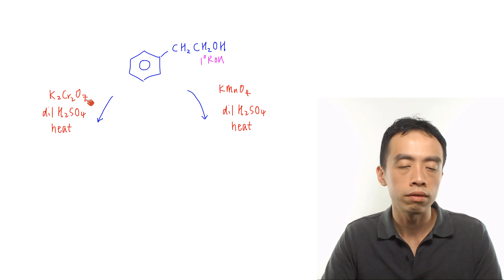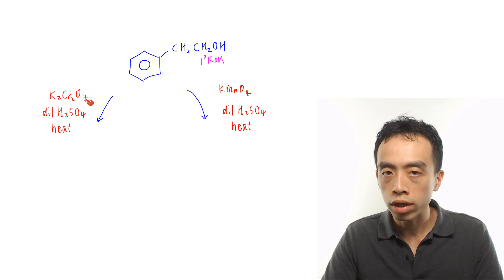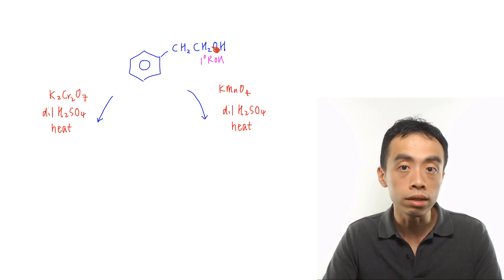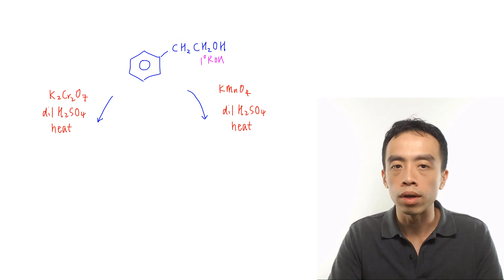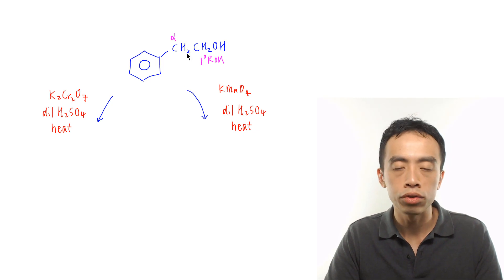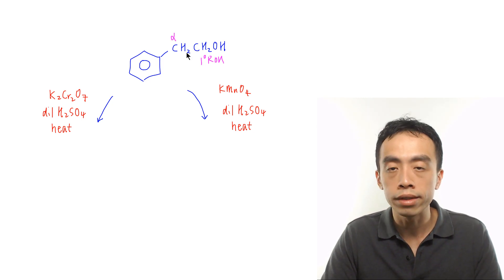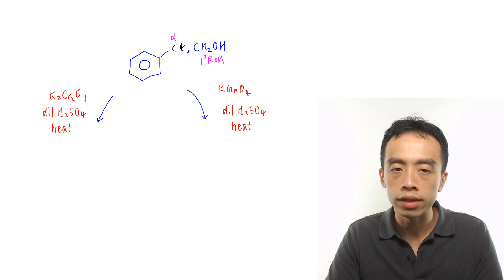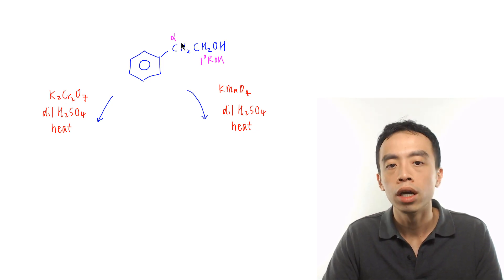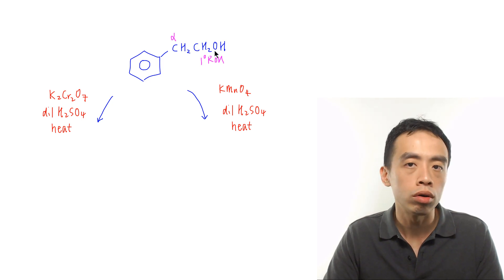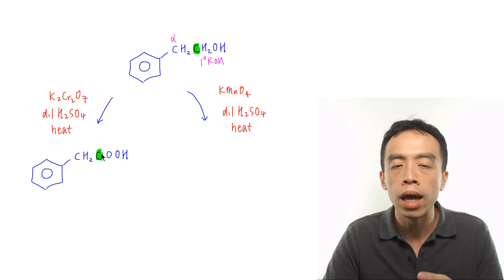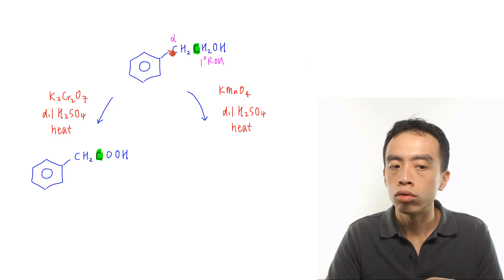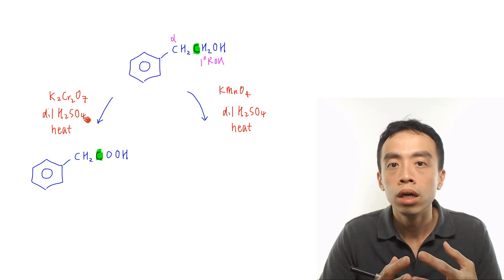With K2Cr2O7, it is strong enough to oxidize the primary alcohol to an acid functional group. You'll notice the alpha carbon in the side chain does have a hydrogen, so in principle it could be oxidized to benzoic acid, but dichromate is not strong enough to oxidize the alpha carbon to benzoic acid. It can only oxidize the primary alcohol to an acid, so that is the product when using dichromate.